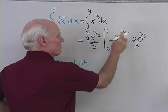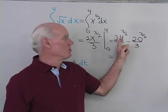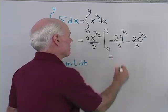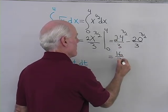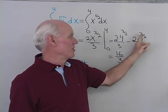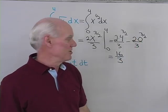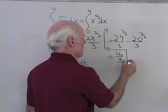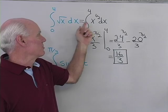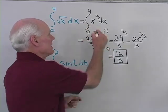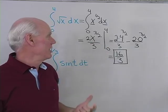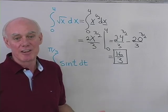Now I evaluate at 4: 2 times 4 to the 3/2, all divided by 3, minus 2 times 0 to the 3/2, all divided by 3. For 4 to the 3/2: take the square root of 4, that's 2, cube it, that's 8, times 2 is 16, divided by 3. The second term is just 0, since 0 to the 3/2 is 0. So the answer is 16 thirds. I had a square root, I rewrote it with an exponent, confirmed the x terms match, and used the antiderivative formula.